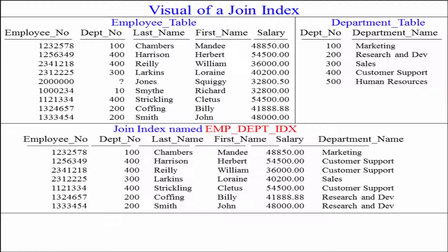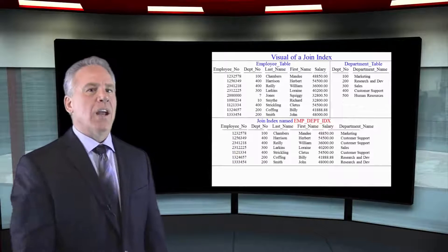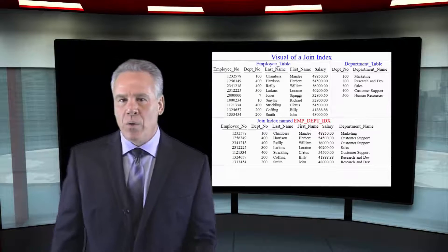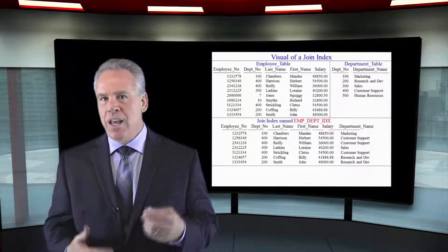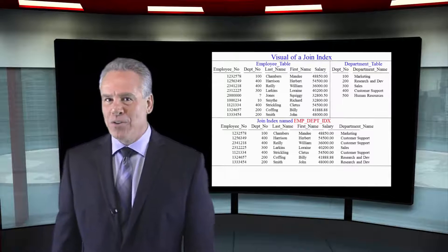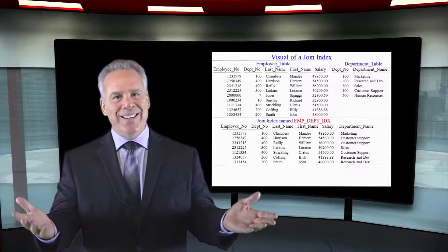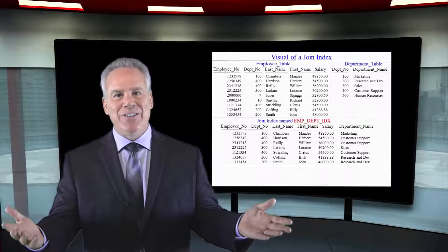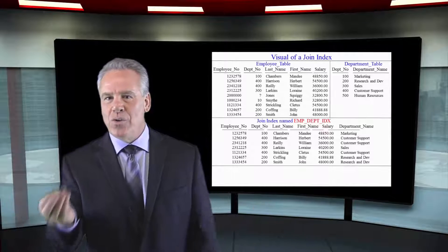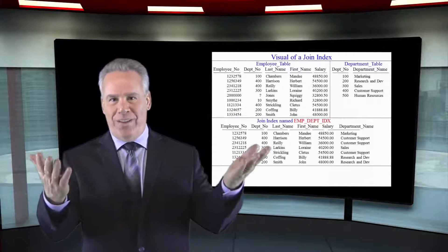The parsing engine decides when to get the data from the join index or from the employee table or department table. Now, why would we do this? Well, one of the things about a join index is, if I add a row to the employee table or I add a row to the department table or do an update of any kind, the join index is then inserted or updated too. So, you can guarantee it is always in perfect step with the tables.